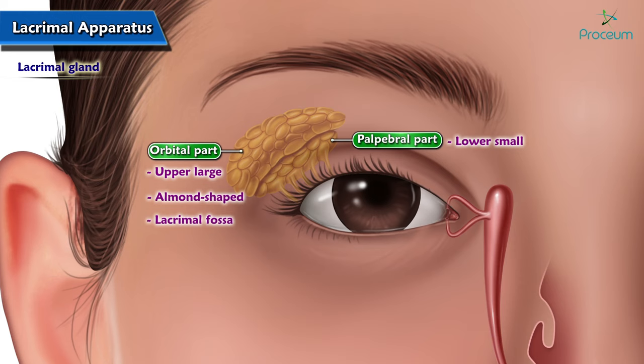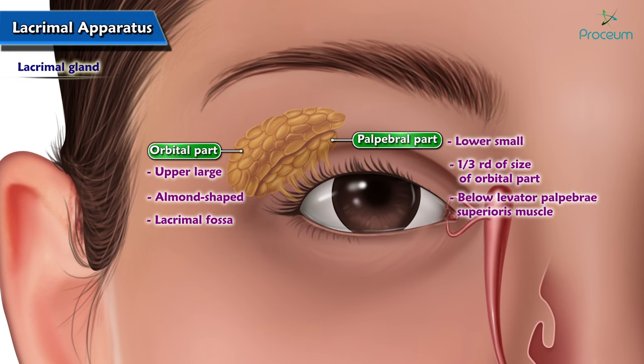The palpebral part is one third of the size of the orbital part and is situated in the lateral part of the upper eyelid, below the levator palpebrae superioris muscle.